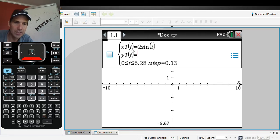And then let's do like 4cos(t). My t is gonna start at zero and go to 2π. My t step is 0.13.